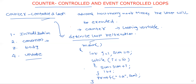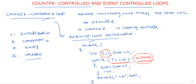Here the important thing is: i = 1 is the counter variable, and the loop is repeated exactly 10 times. We know that information in advance. This is why it is called a counter-controlled loop.